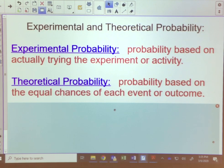Theoretical probability is based on the equal chances of an event or outcome. This is what we were figuring a couple of days ago where we had favorable outcomes over total outcomes.